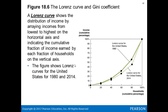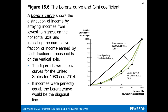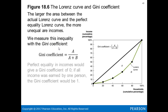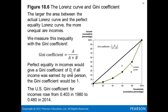The Lorenz curve shows the distribution of income by arraying incomes from lowest to highest on the horizontal axis and indicating the cumulative fraction of income earned by each household on the vertical axis. The curve shown covers 1980 to 2014. If incomes were perfectly equal, the Lorenz curve would be a diagonal line of perfect equal distribution. The larger the area between the actual curve and the perfect equality line, the more unequal income is. A Gini coefficient of zero represents perfect equality; a coefficient of one means all income is earned by one person.